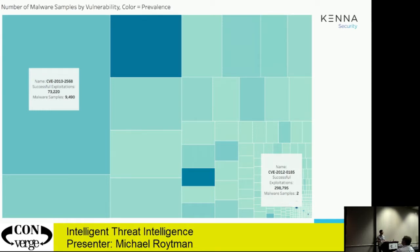We've seen 73,000 successful exploitations on CVE-2010-2568. If you're not looking at how often somebody's actually been compromised — if you don't have the metadata from the outcome measures — you might think this is the most important vulnerability. But the reality is that CVE-2012-0185 has only two malware samples, yet in the past two and a half years there have been 300,000 successful compromises on that vulnerability. So combining those lenses — what do I fix and how many alerts is it generating — is what allows me to distinguish between whether something is actually malicious or risky.